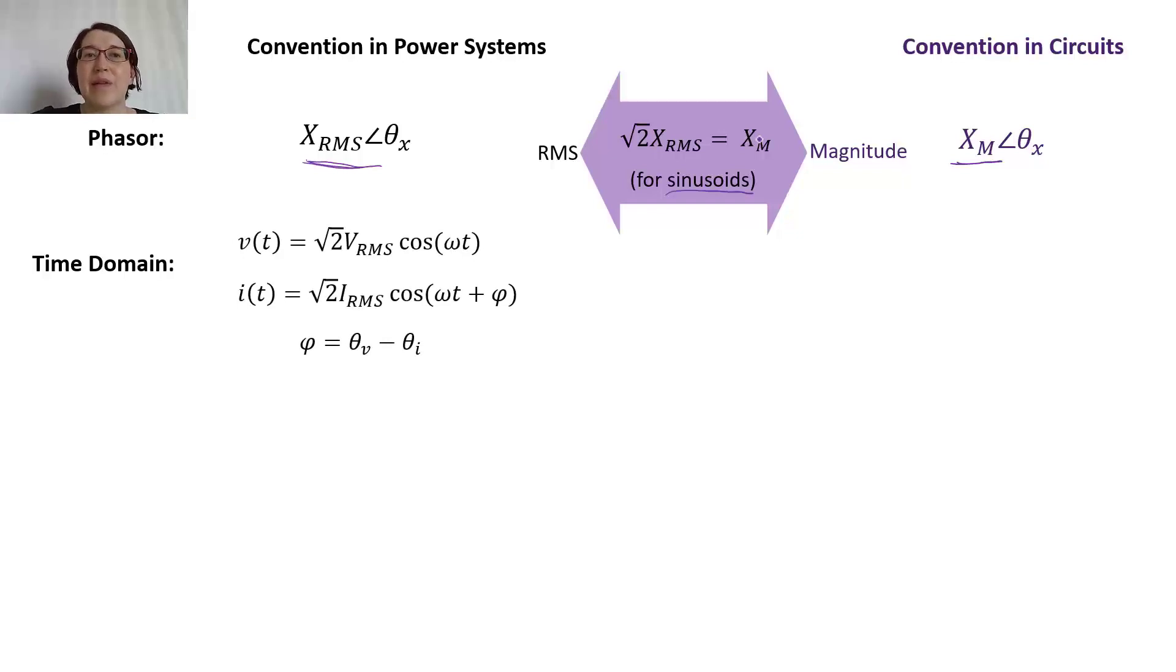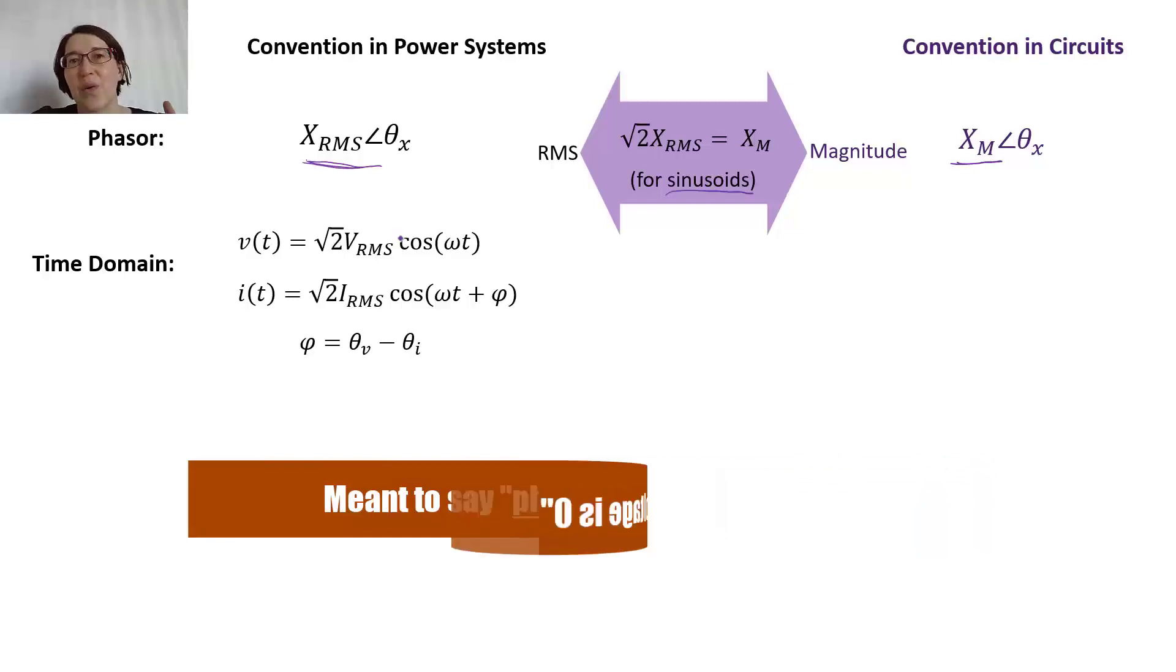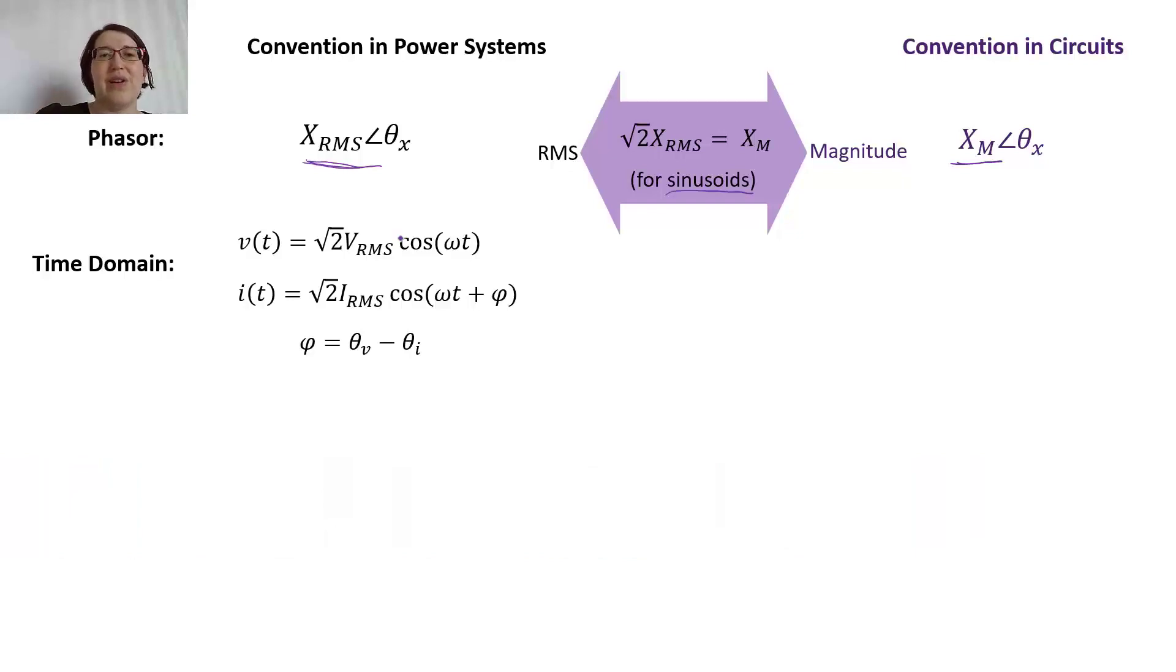When you're in the time domain, it just means that our setup is going to be, usually we put everything in terms of, so the magnitude in the front is root 2 VRMS. And we also tend to assume the voltage is going to be 0 and then we use a phase difference. Not always the case but just a generalization. So we would set up our time domain equations like this usually.